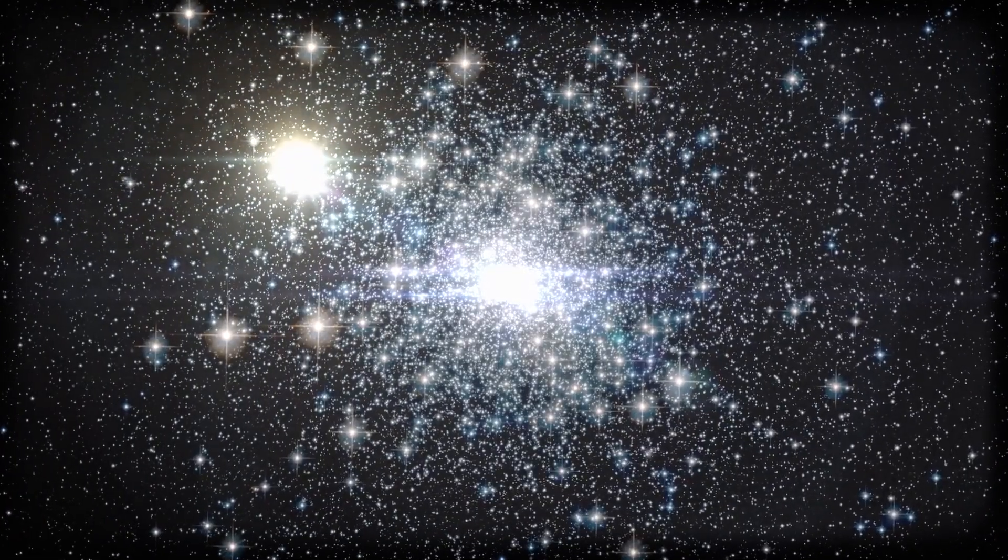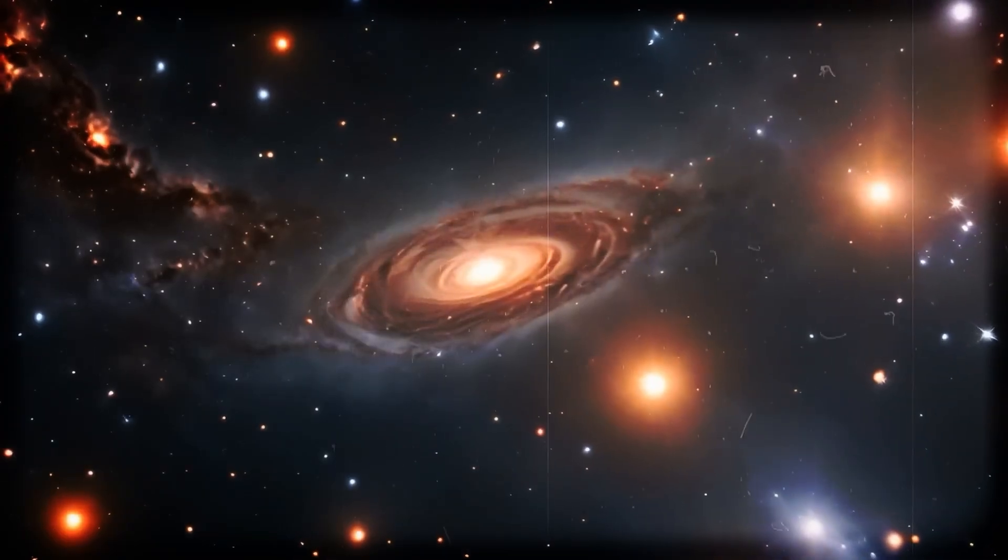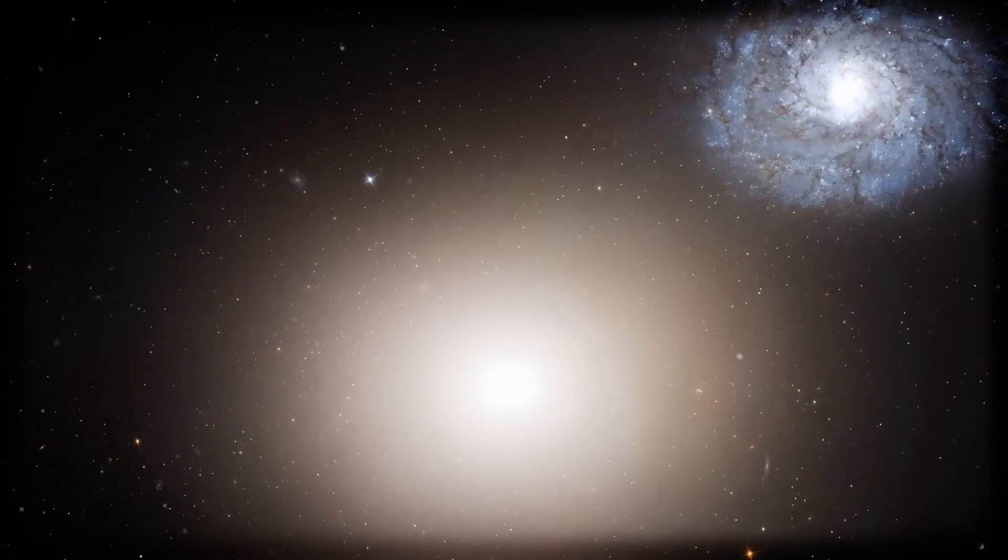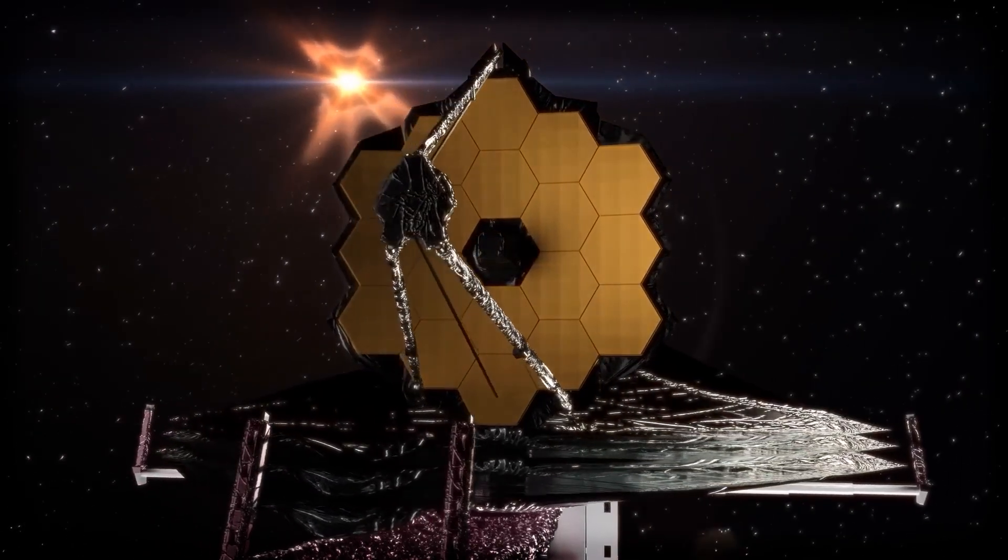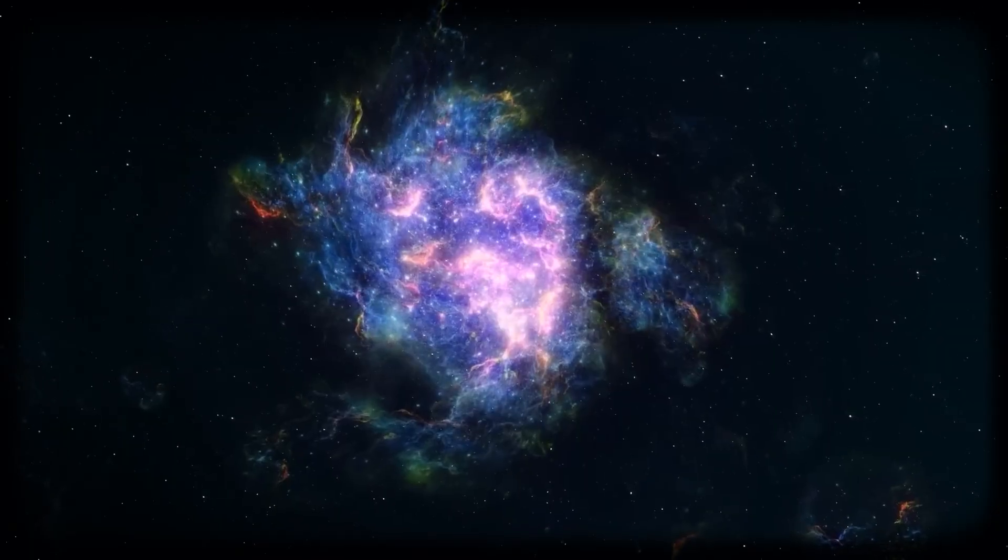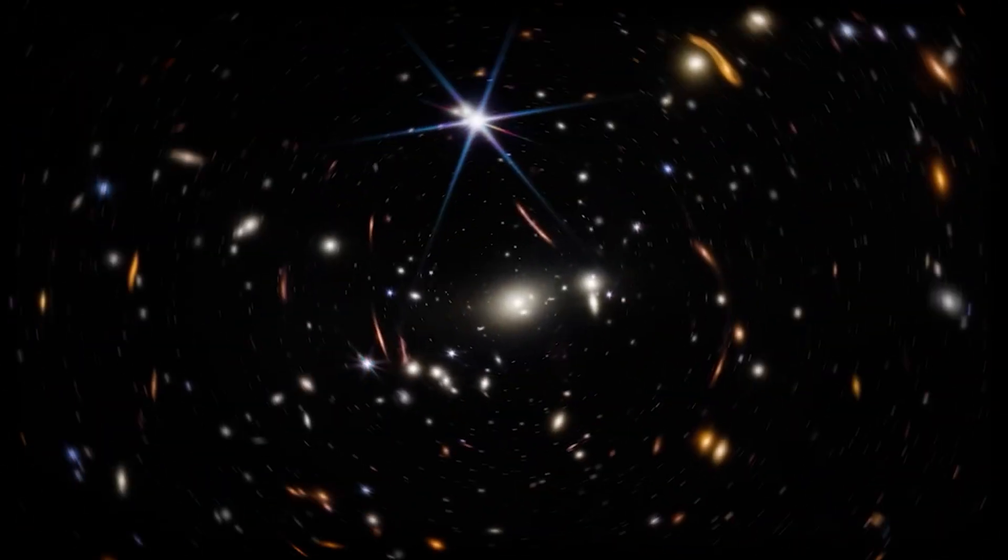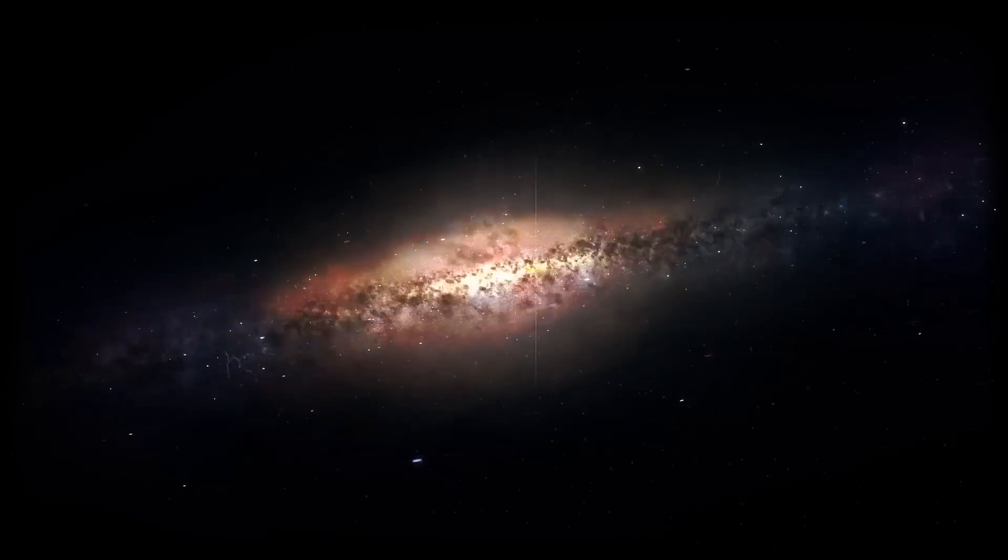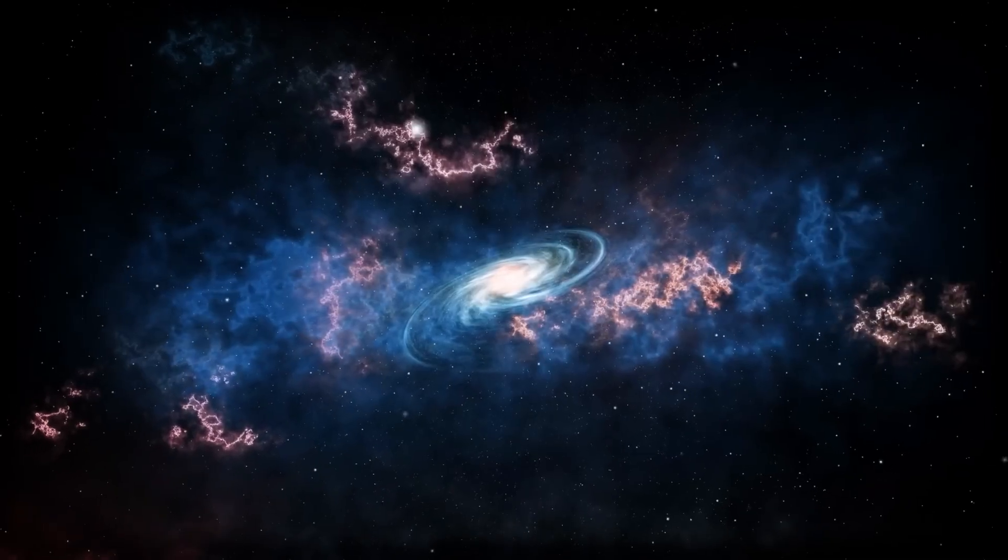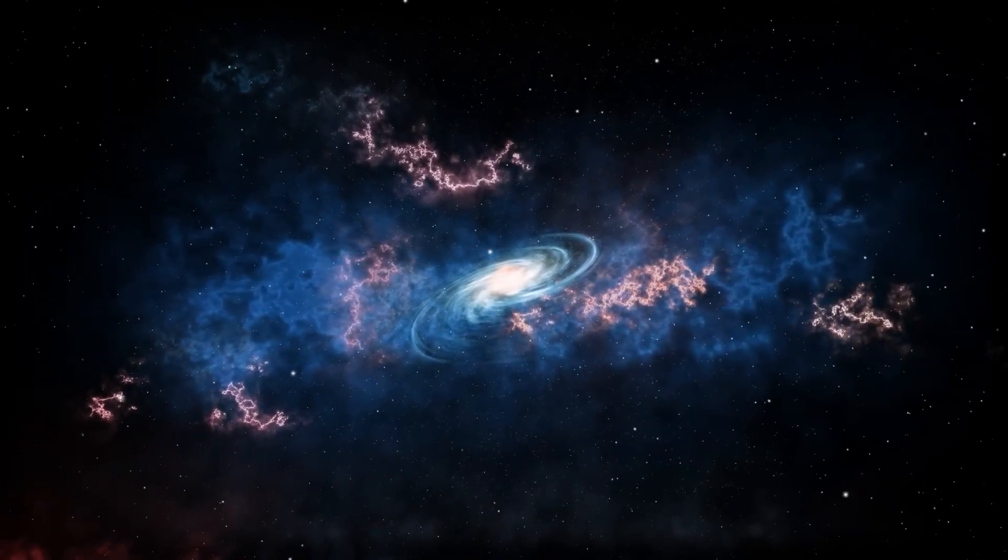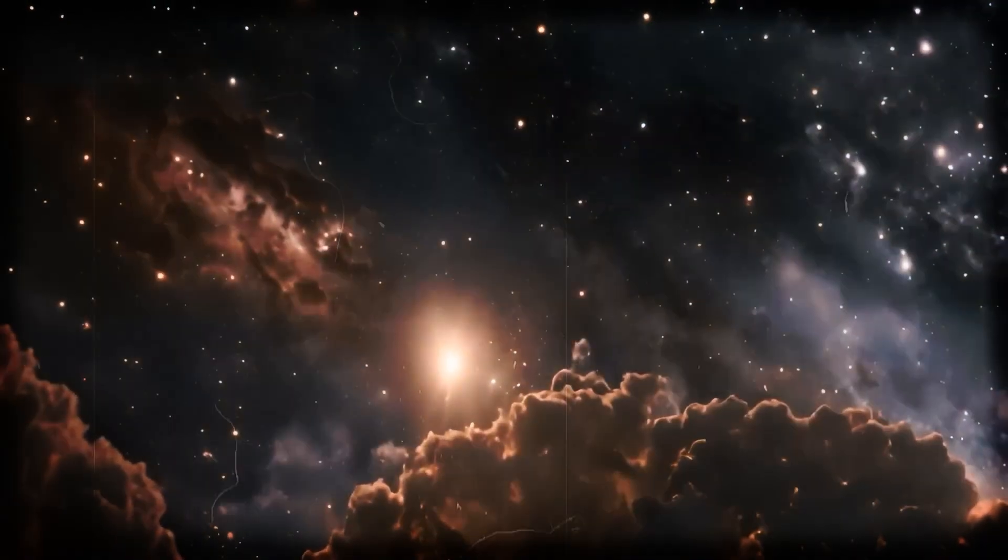And here's where things really go sideways. It's not just when these galaxies form that's surprising. It's how they look. Scientists expected them to be chaotic, clumpy, and under construction, kind of like the universe's version of toddlers learning how to walk. But nope, a lot of these galaxies, they're already well-structured, surprisingly mature, and in some cases, huge. Some even seem to contain older stars and stable, organized shapes.